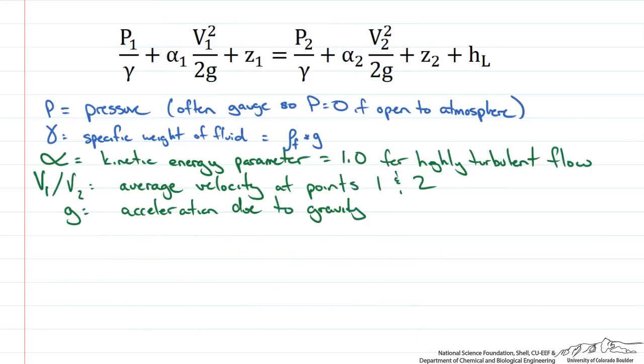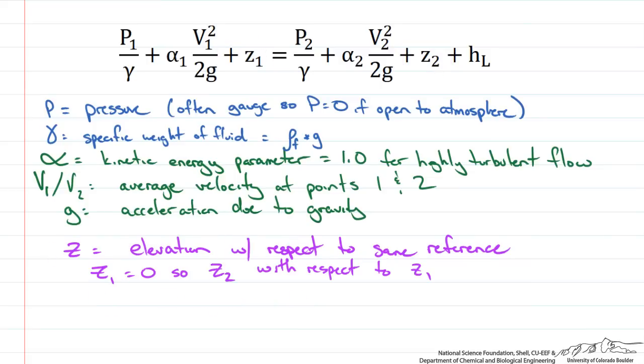The third energy term on both sides, the z, is due to the potential energy or elevation change in our piping system. Simply put both z values are heights based on the same reference plane. It may be that we choose one point to represent an elevation of 0. Meaning that if we say that z1 is equal to 0 now z2 will be with respect to z1. So that allows us to possibly drop out one of the variables from this equation.